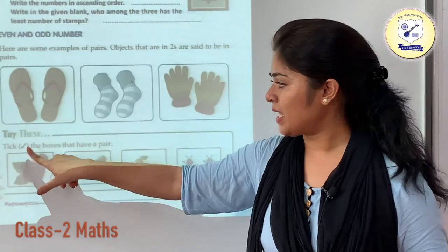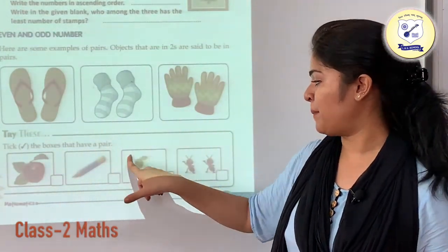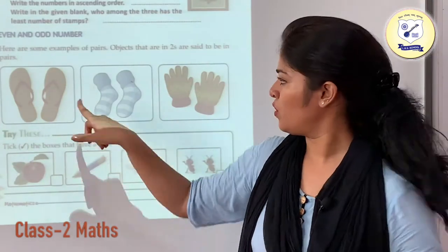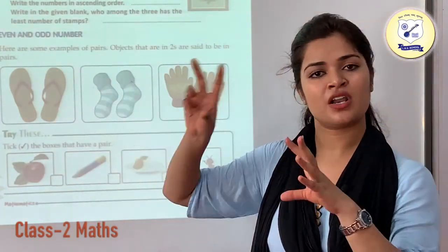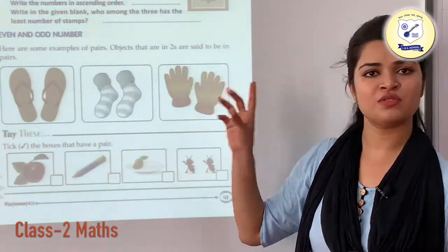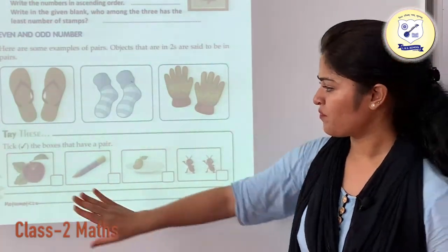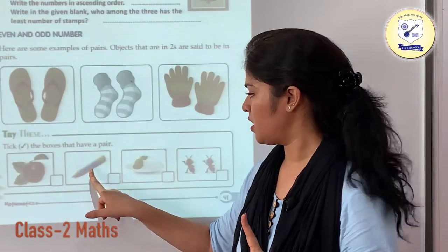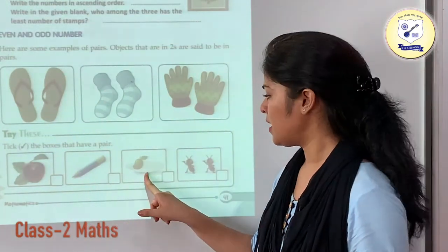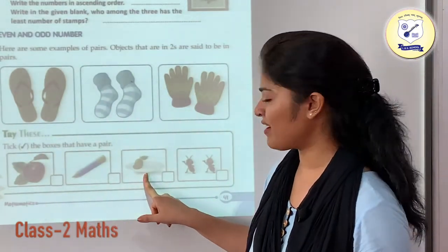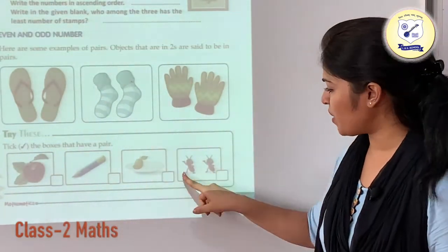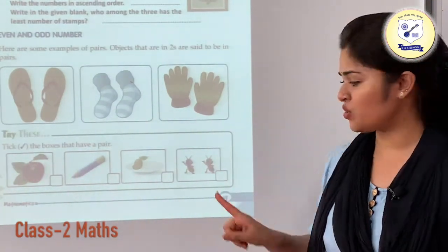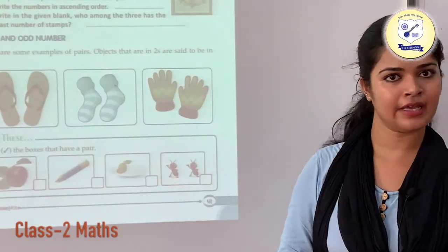Now tick the boxes that have a pair. This is a pair of 2. Here we are having sleepers which are in a pair of 2. These are gloves which are also in a pair of 2. Here we have a picture of an apple which is single. Here a pencil which is also single. This is a mango which is again single. And now we have these ants which are in a pair of 2, so we just need to put a tick in this box.